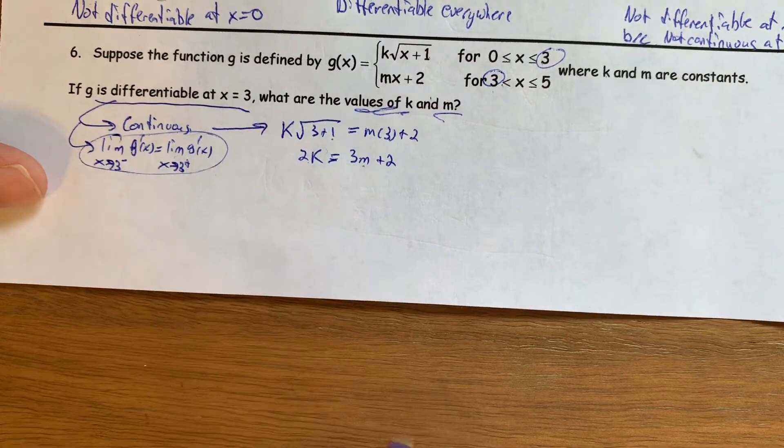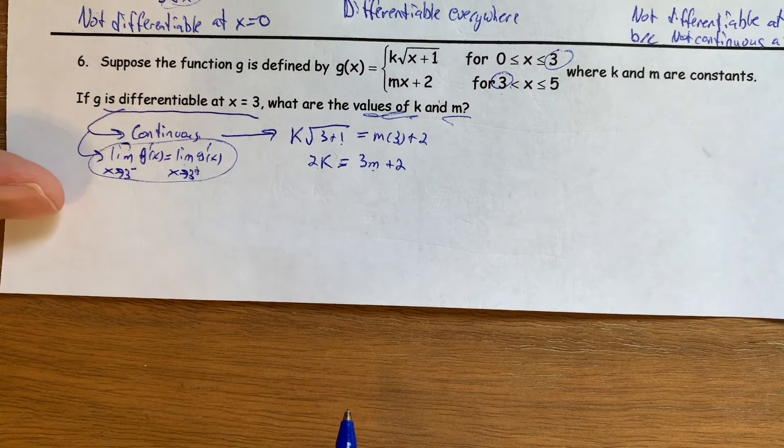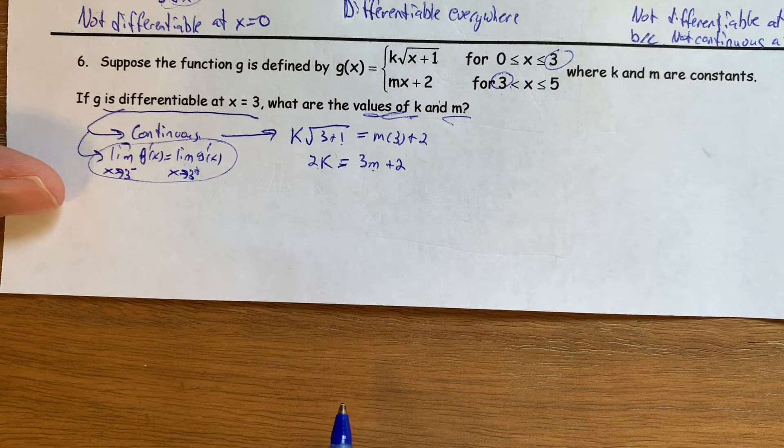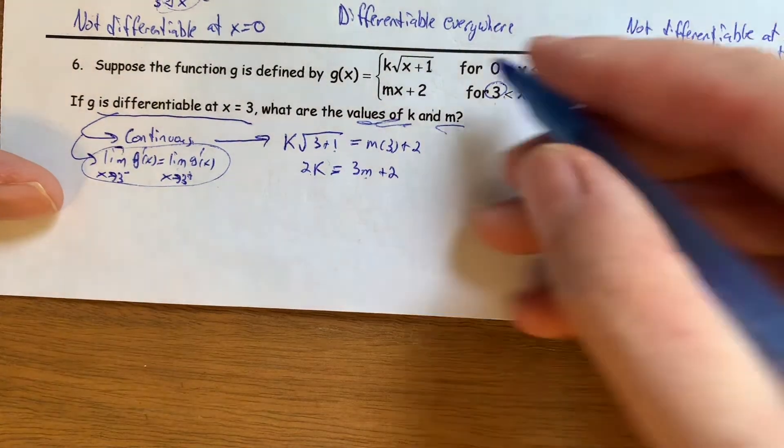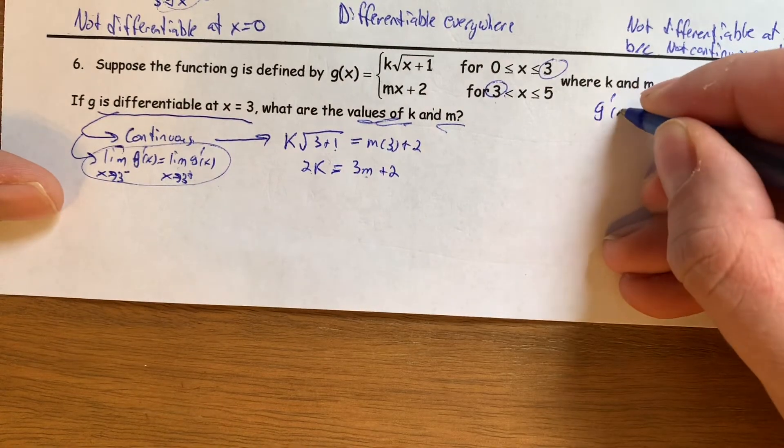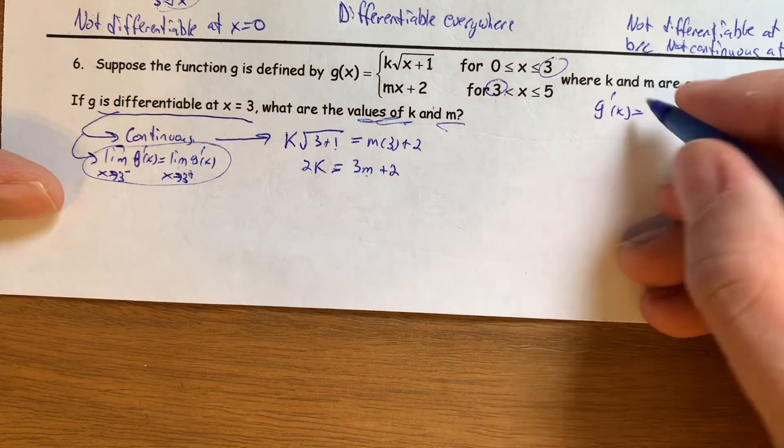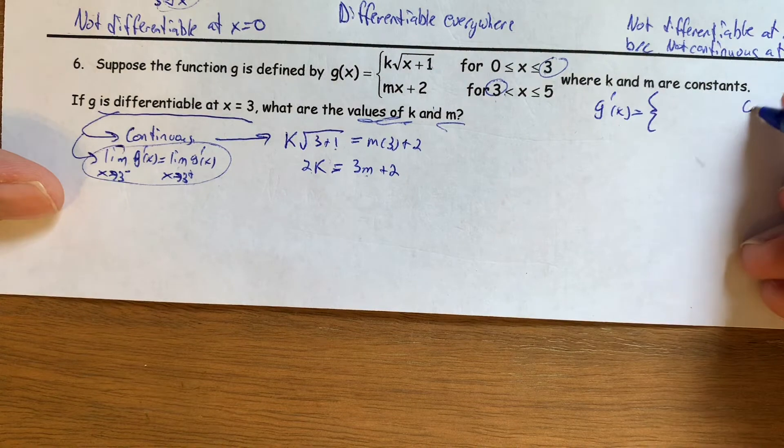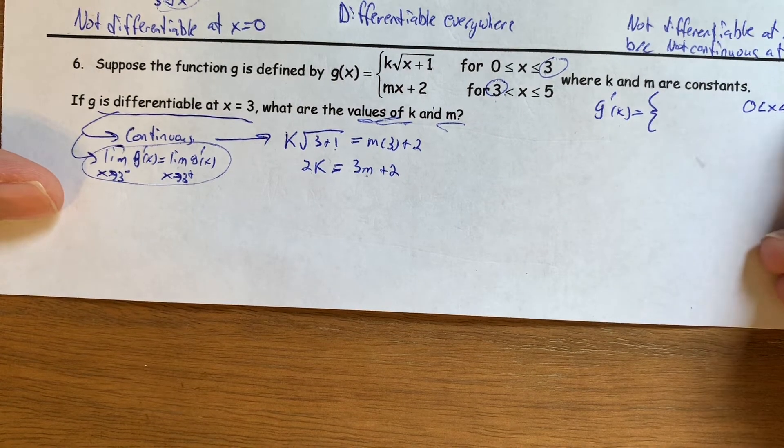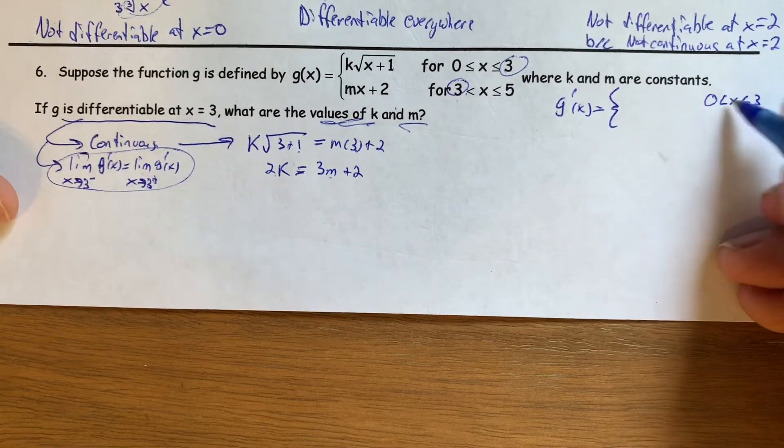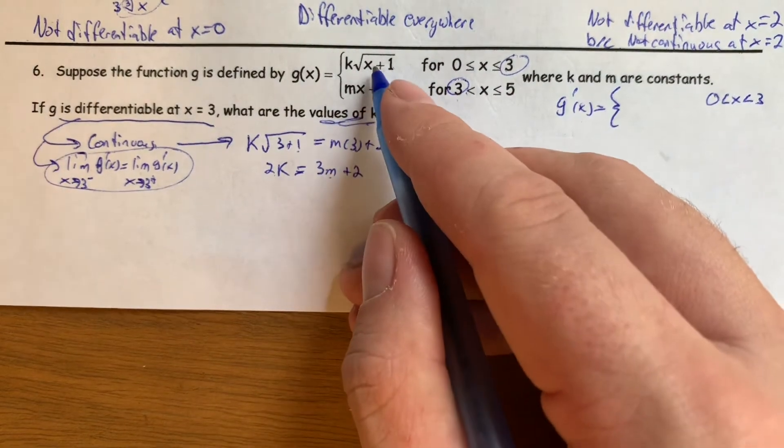Luckily, we have this other thing that also has to be true. The limit of the derivatives from the left and the right have to be the same. And so I'm going to write out a formula for the derivatives. It's going to be between x is 0 and x is 3, not at the end point, so I don't put or equals 2. It'll be whatever the derivative of this function is.